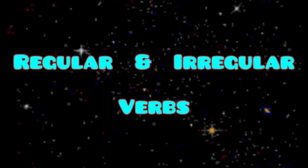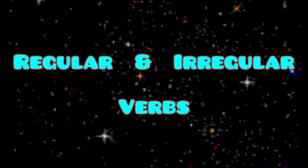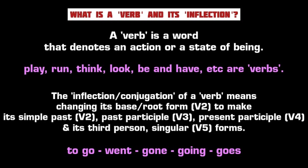Hello and welcome to grammar class. Today's topic is regular and irregular verbs, but first let's learn the inflection of verbs. A verb is a word that denotes an action or a state of being — for example, play, run, think, feel are action verbs, while be, seem, remain are state verbs. Every verb has a base or root form, but when we change the base form for certain grammatical purposes like tense, mood, or voice, it's called the inflection or conjugation of the verb.